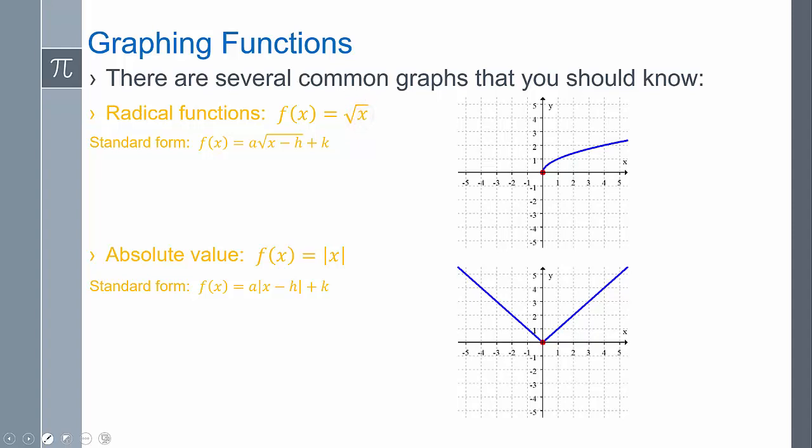Our absolute value function, it has this V shape. It still starts at zero zero. The way that we know it's an absolute value, so if I see absolute value immediately, I need to be thinking about this V shape. It still has the parameters A, H, and K.